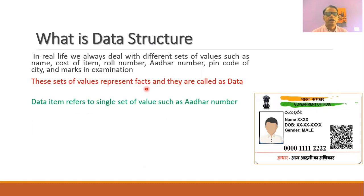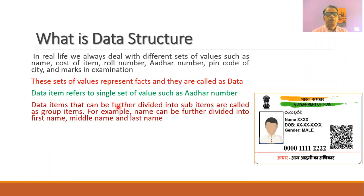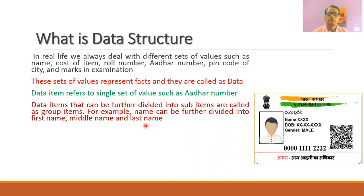A data atom refers to a single set of values, such as an Aadhaar number — this is called a primitive or elementary data element. Sometimes a data item can be further divided into sub-items; such a data item is called a group item. For example, the name of a student can be divided into first name, middle name, and last name — so that is called a group item.